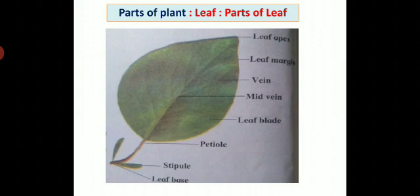Next part of plant is leaf. We can see different parts of leaf in this diagram. Parts of leaf are leaf apex, leaf margin, veins, midvein, leaf blade, petiole, stipule, and leaf base.